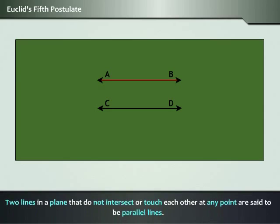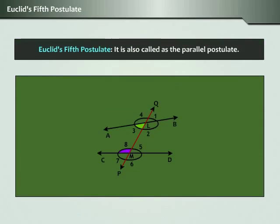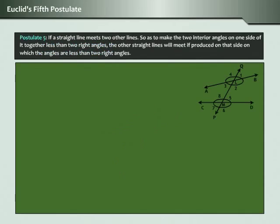Two lines in a plane that do not intersect or touch each other at any point are said to be parallel lines. Now let us take a look at Euclid's Fifth Postulate, which is also called as the parallel postulate. Postulate 5: if a straight line meets two other lines so as to make two interior angles on one side of it together less than two right angles, the other straight lines will meet if produced on that side on which the angles are less than two right angles.